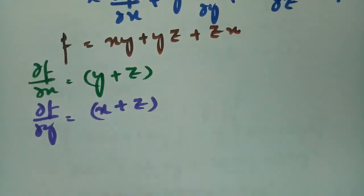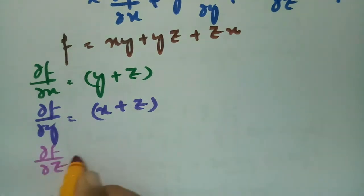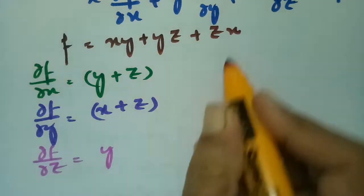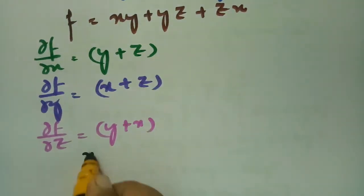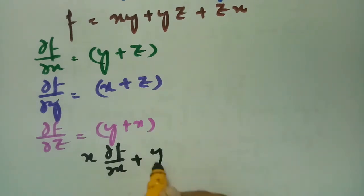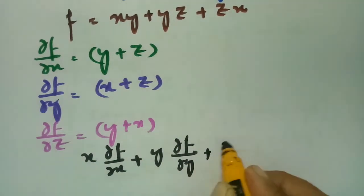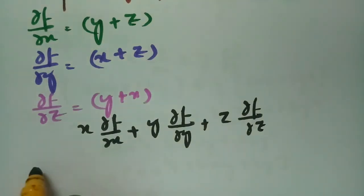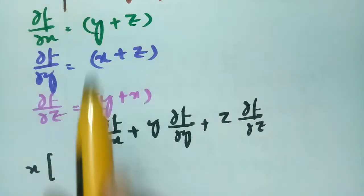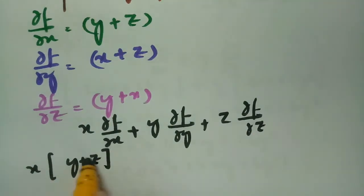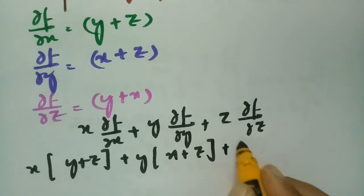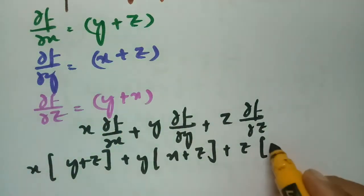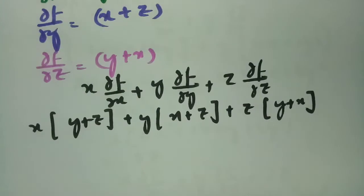The derivative with respect to z: ∂f/∂z equals y plus x. Now for verification of Euler's theorem we compute x into ∂f/∂x plus y into ∂f/∂y plus z into ∂f/∂z, which is x times (y plus z) plus y times (x plus z) plus z times (y plus x).